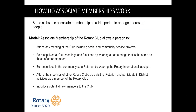Let's look at associate memberships and how they might work. Some clubs use these as a trial period for new potential Rotarians. They allow people to attend meetings, including socials and community service projects. They're recognized at club meetings by wearing name badges the same as other members. They're given a Rotary pin and are able to go to other club meetings and introduce potential new members. This associate membership is often a no-charge or low-charge fee to get people into Rotary. If these memberships don't include the fee, Rotary International considers them honorary members. If you do charge a fee and pay Rotary dues, they would be full members and Rotary would recognize them.